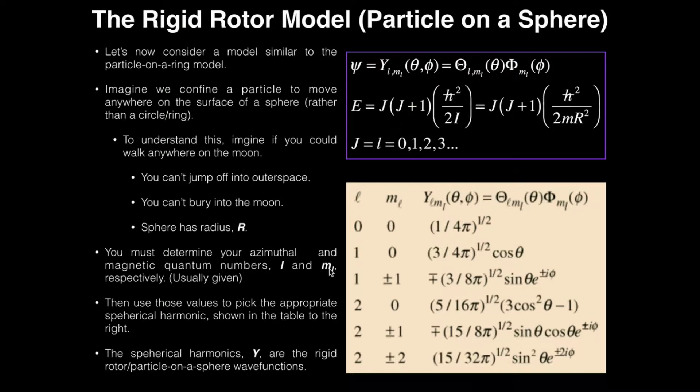And it turns out that the wave functions for the rigid rotor model, which we normally call psi, are called something different in this context. These are called spherical harmonics and they're normally denoted by this Y. And you notice here there's some subscripts, L, magnetic quantum number.